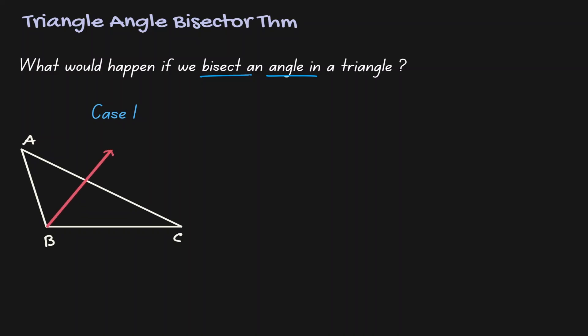Angle B got cut into two congruent angles. Let's call this intersection E. Notice that this angle bisector also cut the original triangle into two smaller triangles: triangle BAE and triangle BEC. And there is a relationship between these two triangles — that is, the sides of those triangles are in proportion.